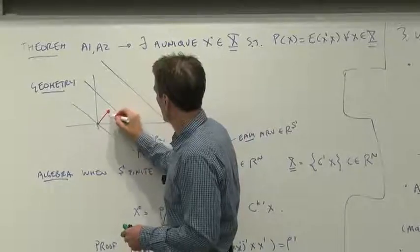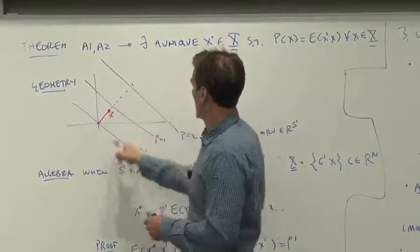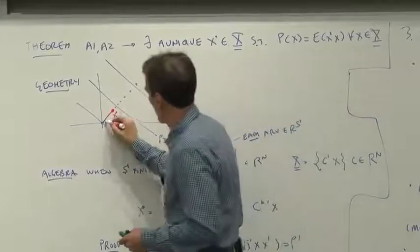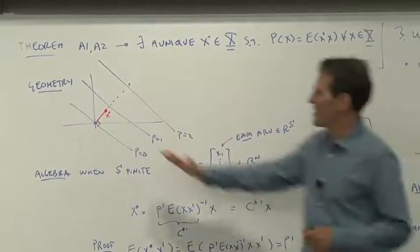There's x*, and all these prices are generated as inner products with x*. That's constructed to be orthogonal to the price hyperplanes.